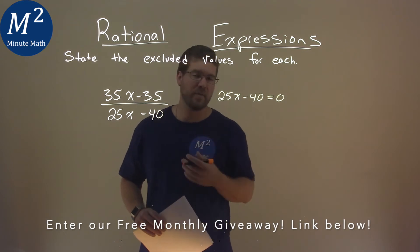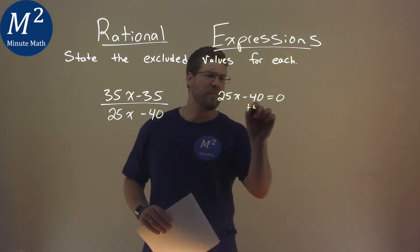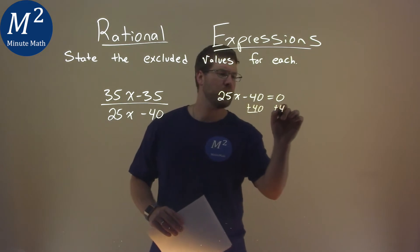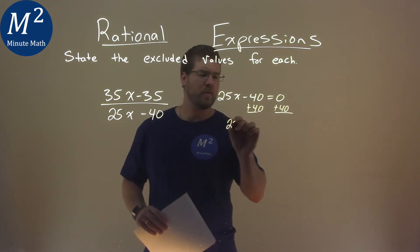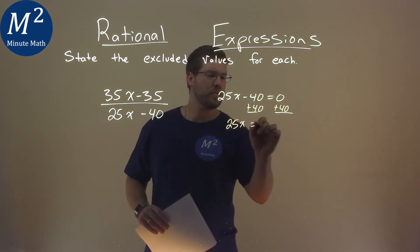Remember, we can't divide by 0. So now we solve. We add a 40 to both sides, and so we have a 25x equals a positive 40.